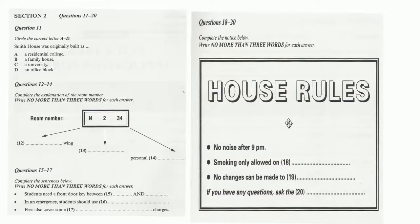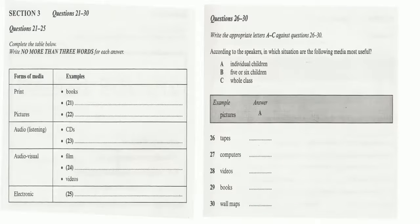That is the end of Section 2. You will now have half a minute to check your answers. Now turn to Section 3. Section 3. You will hear a conversation between two students, Lynn and Robin, who are discussing an assignment. First, you have some time to look at questions 21 to 30. Now listen carefully to the conversation, and answer questions 21 to 30.